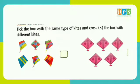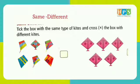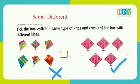Next is same and different. Spelling of same is S-A-M-E. And spelling of different is D-I-F-F-E-R-E-N-T. We will tick the kites which are same. Can you tell me which kites are same? The kites in the second picture, on the right, they are same. And in the first picture, all the kites are different. We have ticked the same kites and crossed the kites which are different.